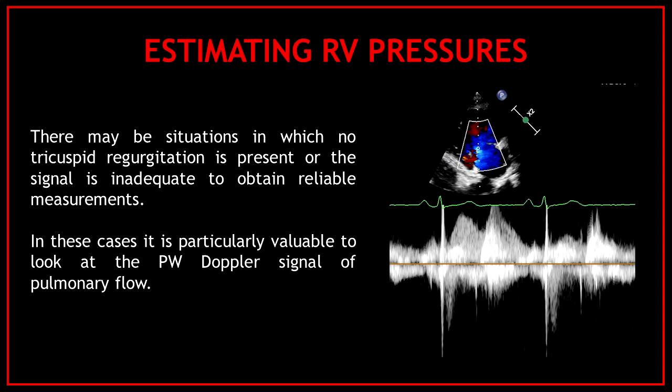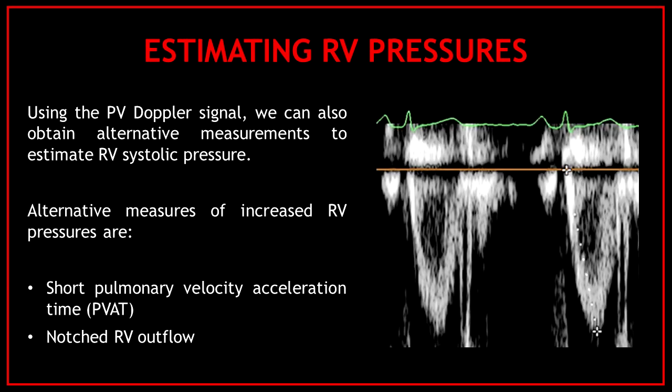There may be situations in which no tricuspid regurgitation is present or the signal is inadequate to obtain reliable measurements. In these cases it is particularly valuable to look at the pulse wave Doppler signal of pulmonary flow. Using the pulmonary valve Doppler signal we can also obtain alternative measurements to estimate the right ventricular systolic pressure.